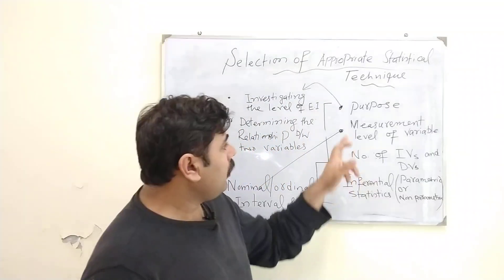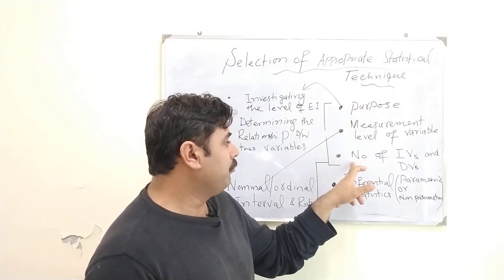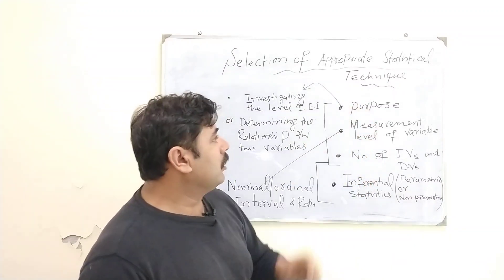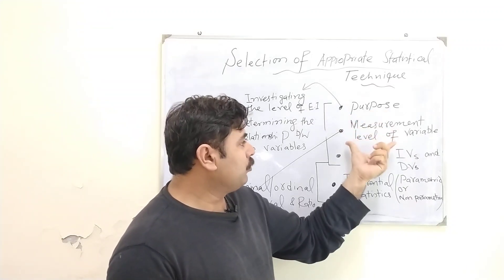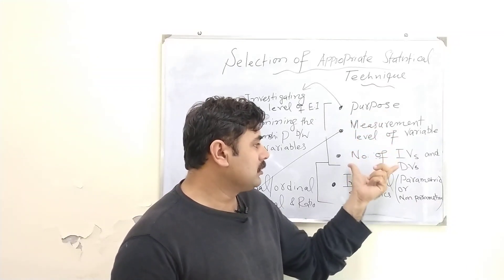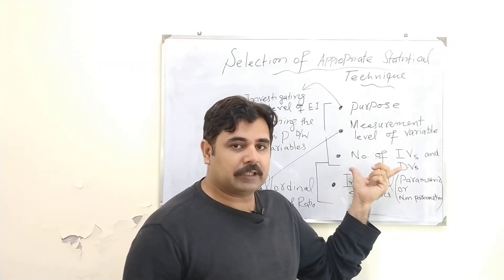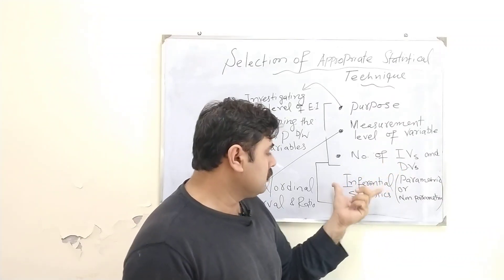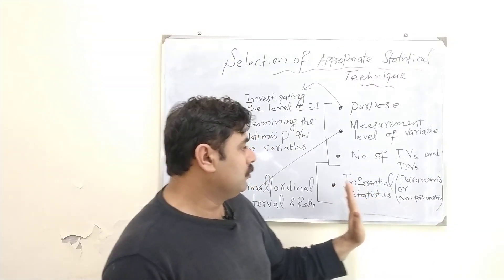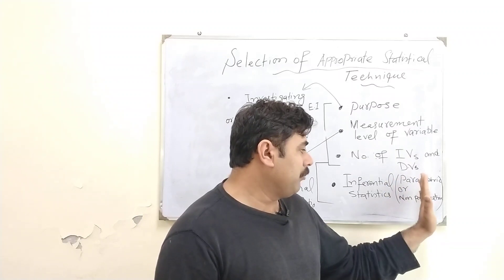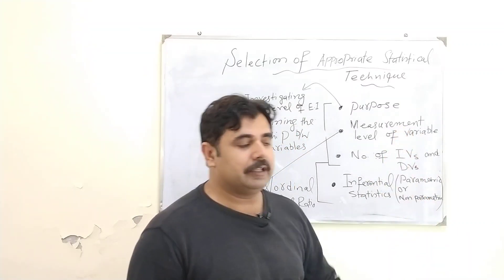There are four things you should remember to select an appropriate statistical technique. First is the purpose. Second is the measurement level of variables. Third is the number of independent and dependent variables in your research question or hypothesis. And the last one is whether you are going to use parametric or non-parametric statistics.